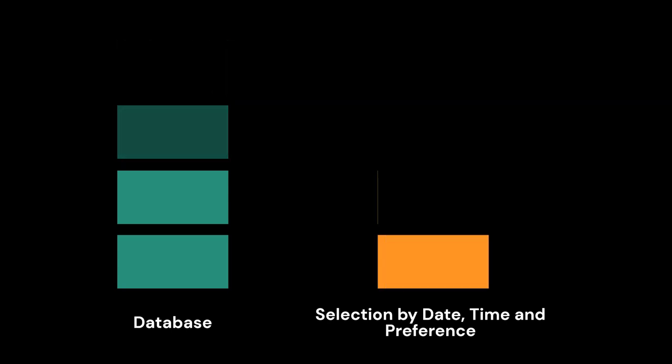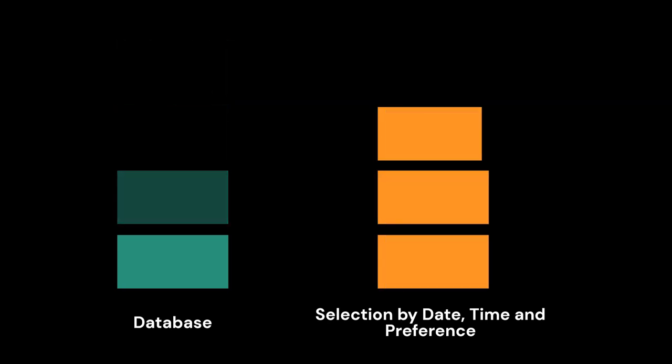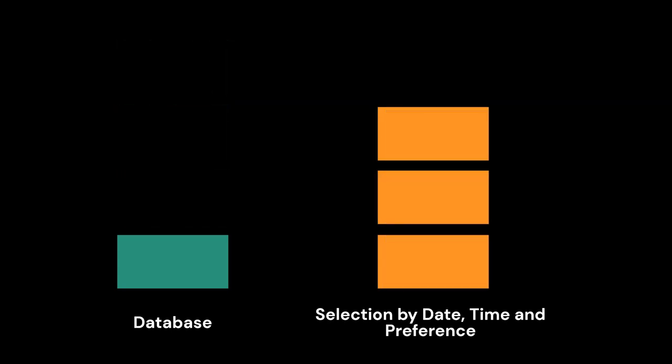Step 2. When the waitlist opens, SNRHA will build the database of applicants. After the waitlist closes, SNRHA will select applicants from the waiting list based on date, time, and preference. Preference may include, for example, veteran or work preference.